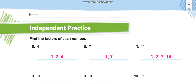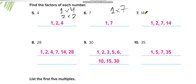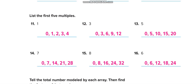Next is independent practice. For the first 6 questions you will find the factors. For example for 4: write 1×4 and 2×2, so the factors are 1, 2, and 4. For 7: just 1 and 7. For 14: 1×14 and 2×7. Finish these questions and match your answers from this video. Similarly, find the first 5 multiples for the multiplication questions.